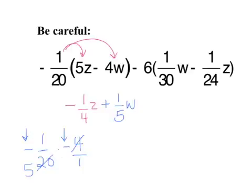Moving on. Minus. See that minus there? I've got to remember that minus. So I have a negative 6 times 1 over 30 w. So negative 6 times 1 over 30 is going to give me 1 fifth. So minus 1 fifth w. I already noticed something.